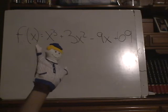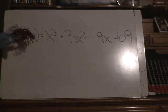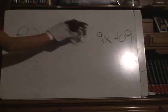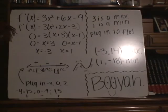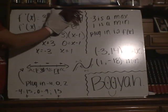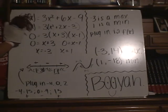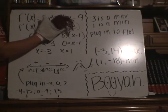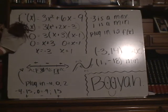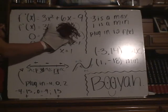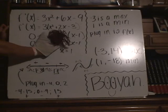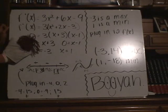Here we have an example of a cubic function! Tina, take it away! You start out with a function, f of x equals x cubed plus 3x squared minus 9x plus 69. When you take the derivative, you get f prime of x equals 3x squared plus 6x minus 9. You can factor out a 3 to get 3 times the quantity x squared plus 2x minus 3. Then you can factor it even further and set the equation equal to 0 to get 0 equals 3 times x plus 3 times x minus 1. You end up with x equals negative 3 and x equals 1.